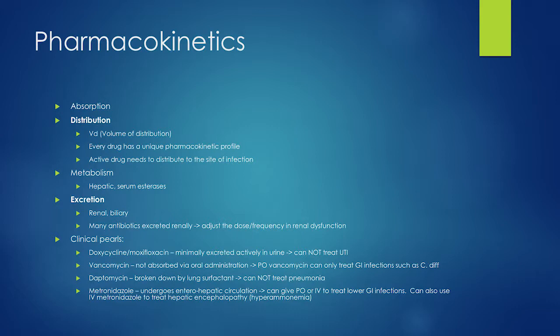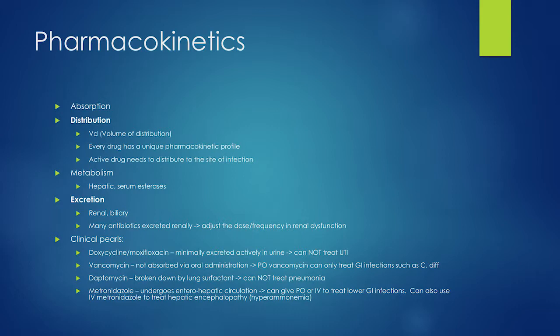Some antibiotics are hepatically metabolized, but interestingly many antibiotics are actually renally cleared rather than hepatically cleared. A clinical pearl: you need active drug to reach the site you want to treat. Doxycycline and moxifloxacin are hepatically metabolized and not renally cleared — so you cannot treat a urinary tract infection with doxycycline or moxifloxacin because they don't get there as active drug.